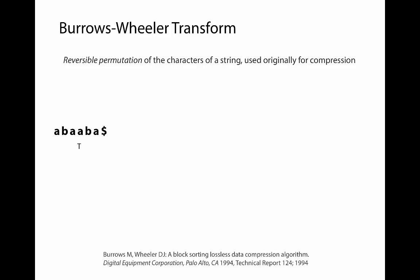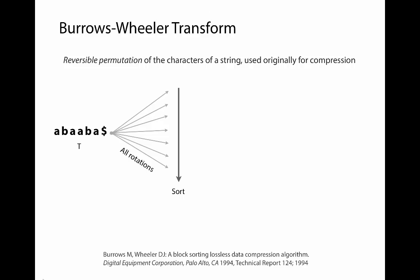The Burrows-Wheeler transform is a reversible permutation of the characters of a string. This idea was originally used for compression, and I'll tell you a little bit later about how it was used for compression. So let's say we're starting with a string T over here, and it has our dollar sign at the end. The dollar sign is a character that's less than all the other characters in the alphabet and does not appear anywhere else in T. We're going to take this T and produce all the distinct rotations of T.